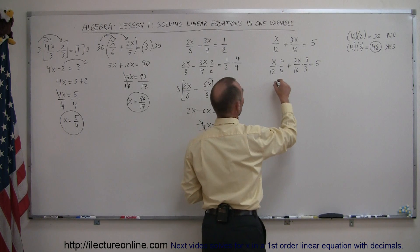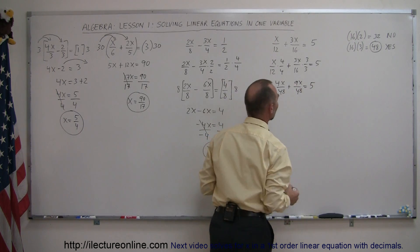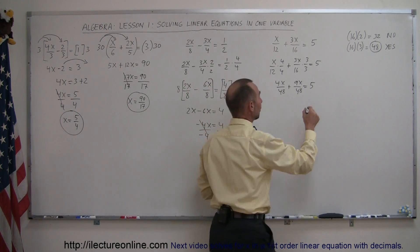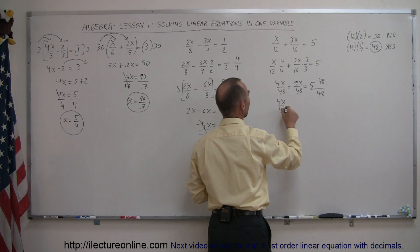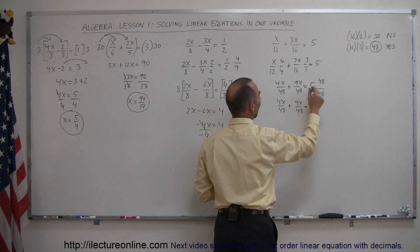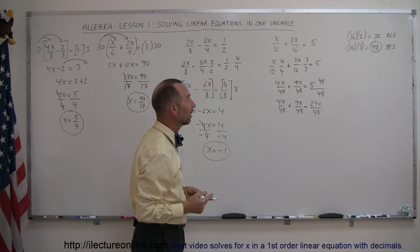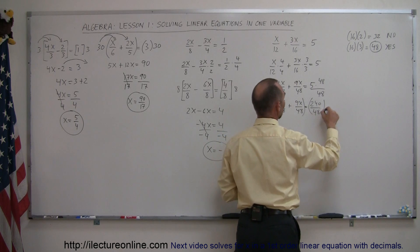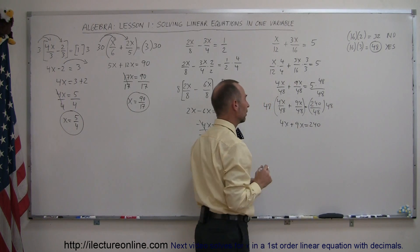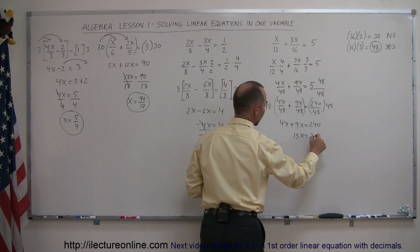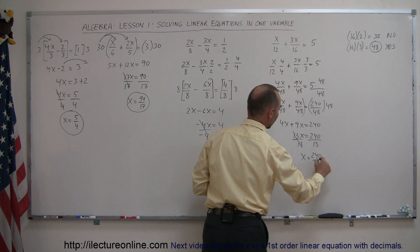Now multiply the right side by 48 over 48 as well, so 5 times 48 is 240 over 48. You can get rid of the denominators by multiplying both sides by 48 — the denominators cancel out — so you end up with 4x plus 9x equals 240. Adding the left side terms together gives 13x equals 240. Finally, divide both sides by the coefficient in front of x, that cancels out, and x equals 240 over 13.